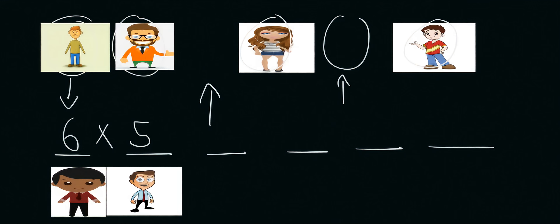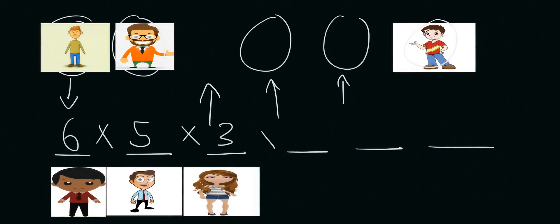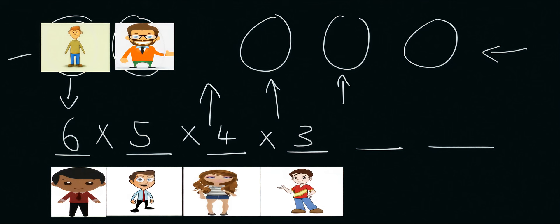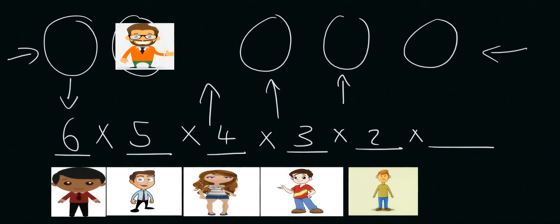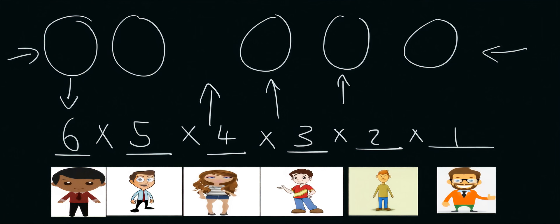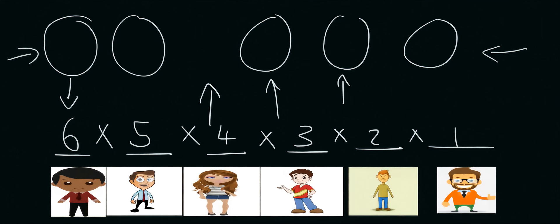And then by now you can probably see where this is going. For the next one, let's say we chose this girl over here, and so we should put a four. Then we obviously have three people available, and let's say we chose this guy over here — so that's three. Then there are two people left, so times two, and we chose this person over here. And then there's one more person left, so times one. So what we do now is multiply all of these numbers together, and that gives us 720.